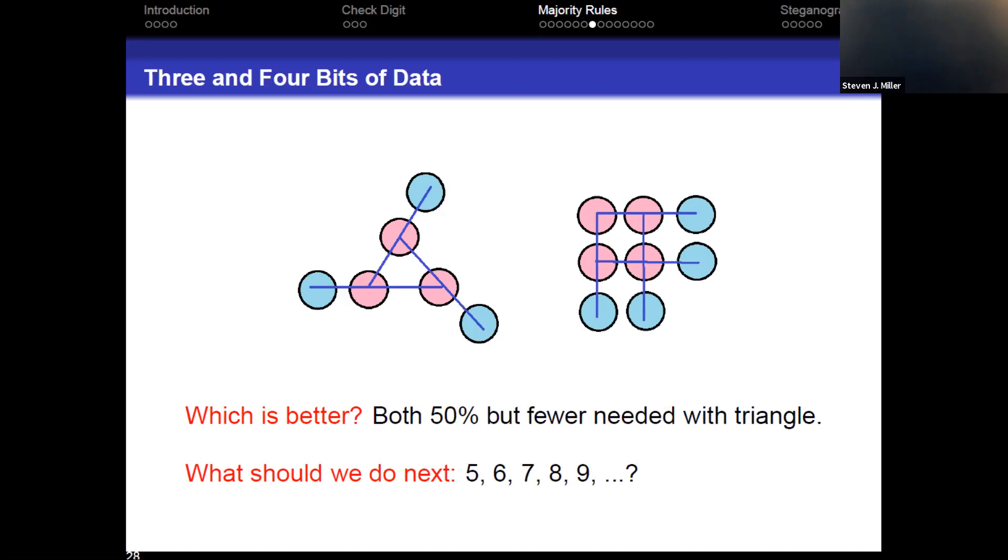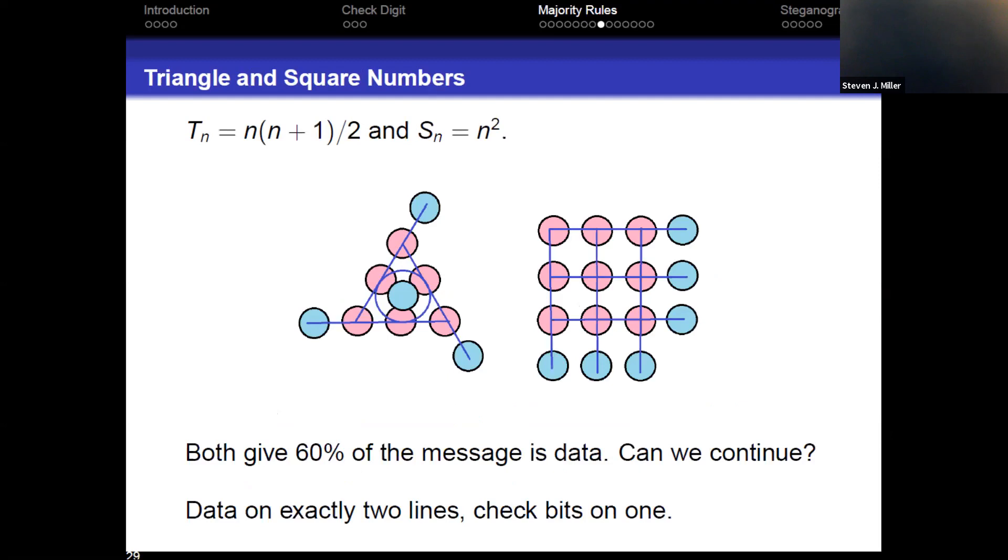So both are 50%. You need fewer with the triangle. So that's good. So what should we do next? Five, six, seven, eight, or nine. Well, the triangle numbers, you know, one, three, six, ten. So this is a natural string of numbers to be looking at. For the square numbers, you know, one, four, nine, sixteen. Could you get something good with seven? Yes, it has been remarked, but it's a different construction. What about eight? Is there a good construction for eight? So here's one way to do a triangle with six and another way to do a square with nine. They both give 60%. But again, the triangle is doing it with fewer data points. So I would give the win to the triangle. It's a little bit more inconvenient, but I'm not the programmer.